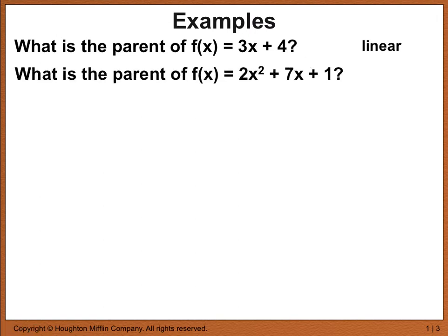What is the parent of f of x equals 2x squared plus 7x plus 1? The quadratic function is the parent of 2x squared plus 7x plus 1. We know that because the degree of this polynomial is 2 — that is, the highest exponent is 2. And therefore, no matter what comes after it, this is still a quadratic function.